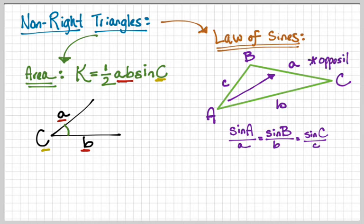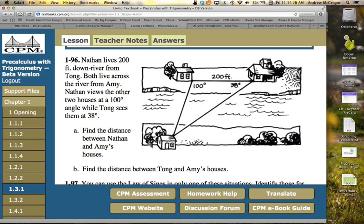Something you can think corresponding to. Alright, opposite. Good. Alright, 196 now. This is going to go right below those notes in the flip book. It reads like this. Nathan lives 200 feet downriver from Tong. Both live across the river from Amy. Nathan views the other two houses at a 100 degree angle while Tong sees them at 38.